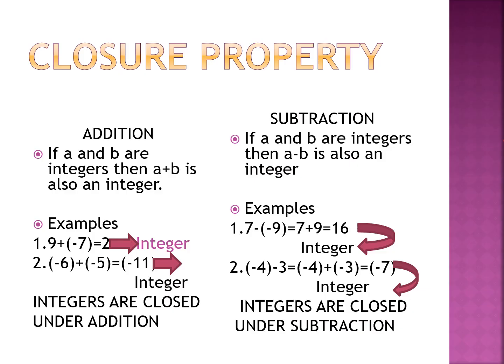We'll come to the first property — that is the closure property of addition. When we talk about closure property of addition, if we add two integers a plus b, then the result or the sum is always an integer. For example, 9 plus (−7) is equal to 2, and (−6) plus (−5) is equal to −11. In both cases the sum is an integer, which means integers are closed under addition.